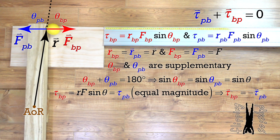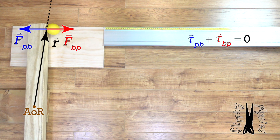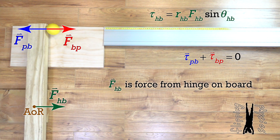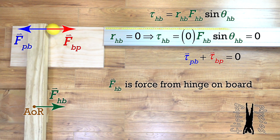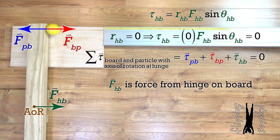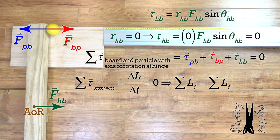Absolutely. And Billy, what about the torque caused by the force from the hinge on the board during the collision? Because the force from the hinge on the board acts directly on the axis of rotation, the r vector for that torque equals zero, which means the torque caused by the force from the hinge on the board during the collision also equals zero. That means the net torque on the system during the collision equals zero, and the angular momentum of the point particle and wooden board system is conserved about the axis of rotation of the wooden board.